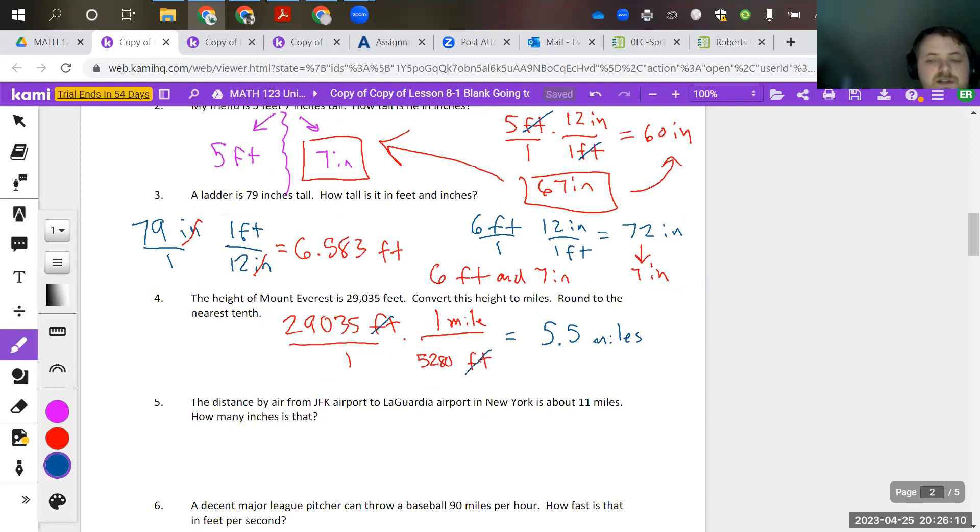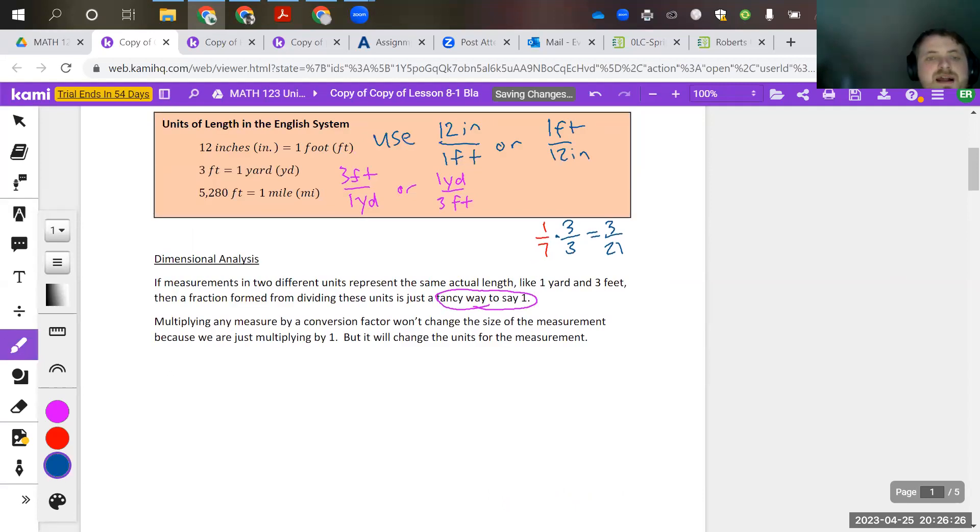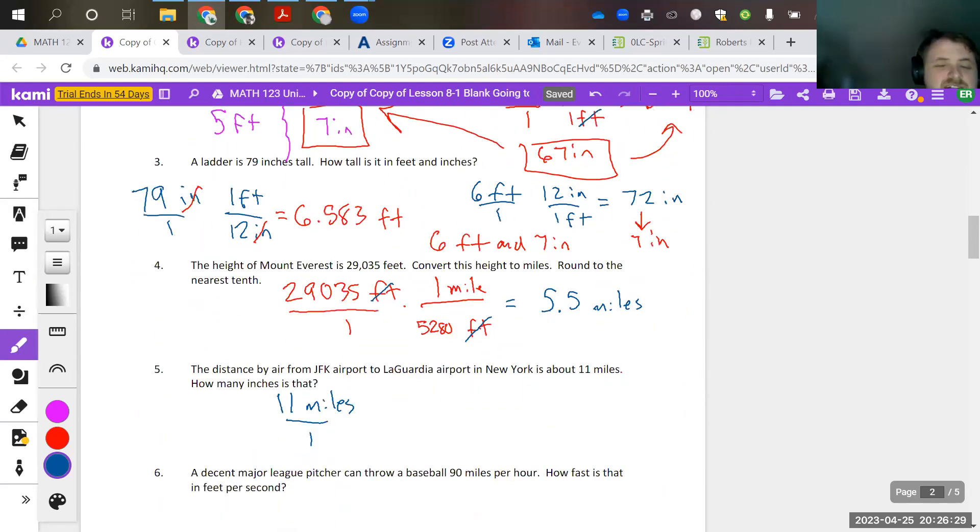So I'll pause the video after this next one. So from JFK to LaGuardia, you have 11 miles. And as you know from your little chart up here, it doesn't just go from miles to inches. So this is like true dimensional analysis is when you really got to mess with a bunch of different ones. And that's where you would convert. You kind of have to go through this gauntlet of conversions. So you want miles in the bottom. So one mile is 5,280 feet.